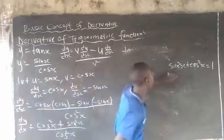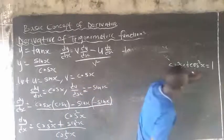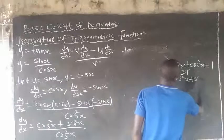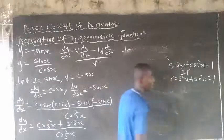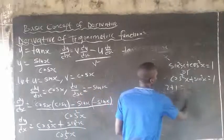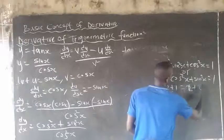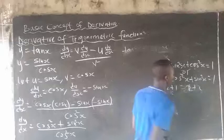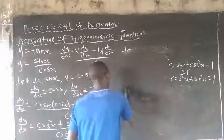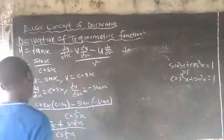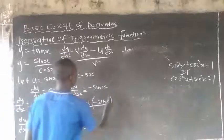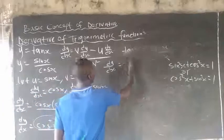Don't forget that sin squared s plus cos squared s equals 1. The law of addition is commutative — whether you write sin squared s plus cos squared s or cos squared s plus sin squared s, it's still equal to 1. So the numerator here is nothing but 1, meaning dy/ds equals 1 over cos squared s.